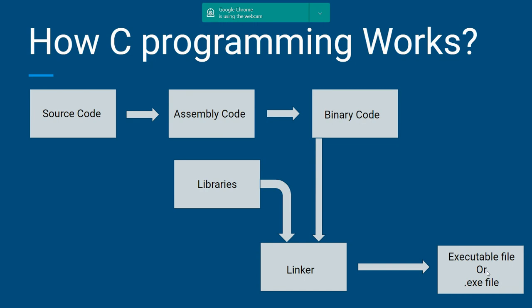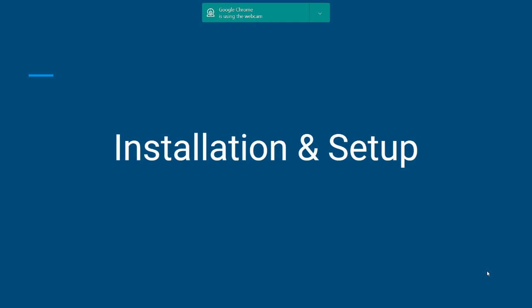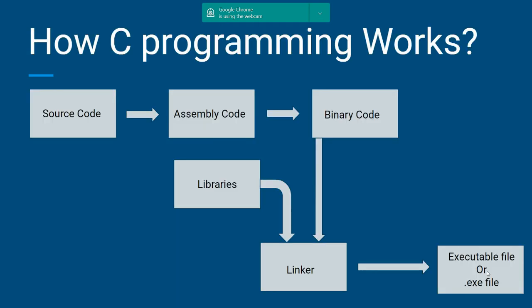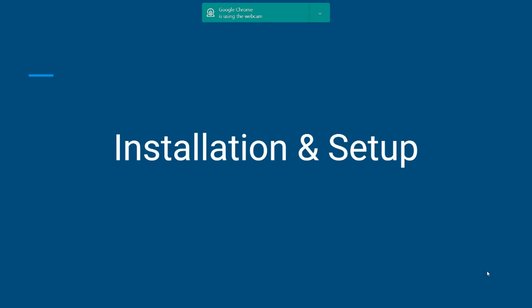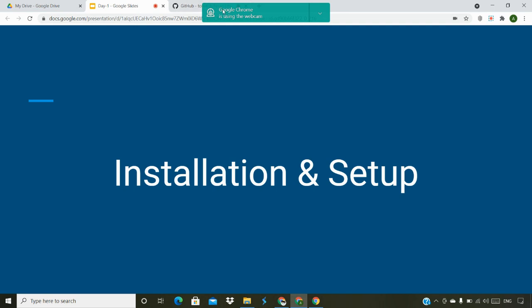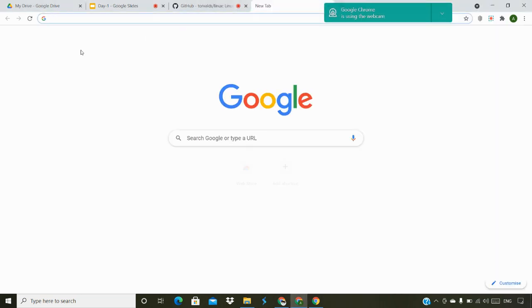The binary code and the libraries — the header files we included in our source code — are all linked together using the linker into one file, which is the .exe or executable file. Once that .exe file is run, we get the output for our source code.